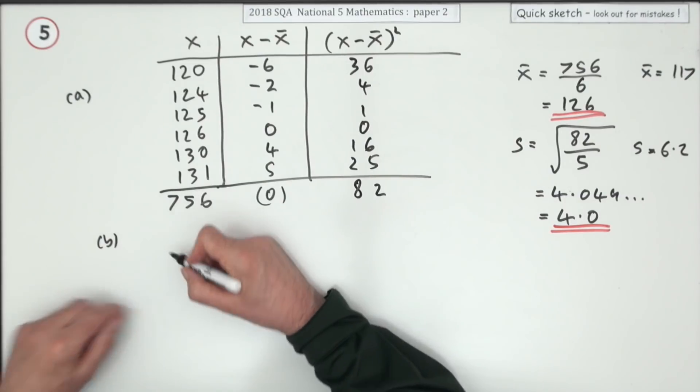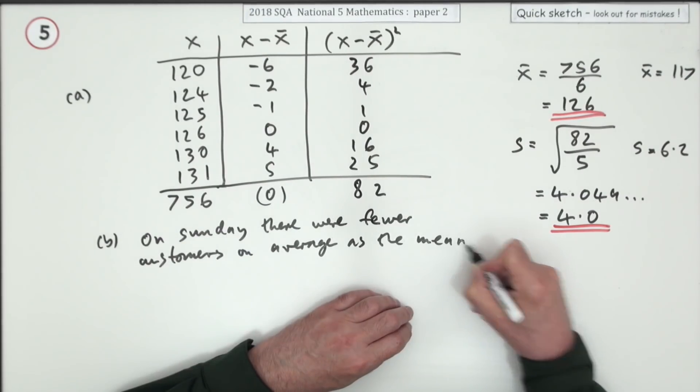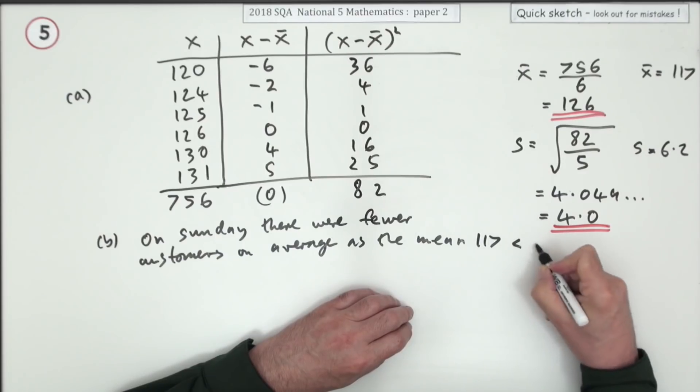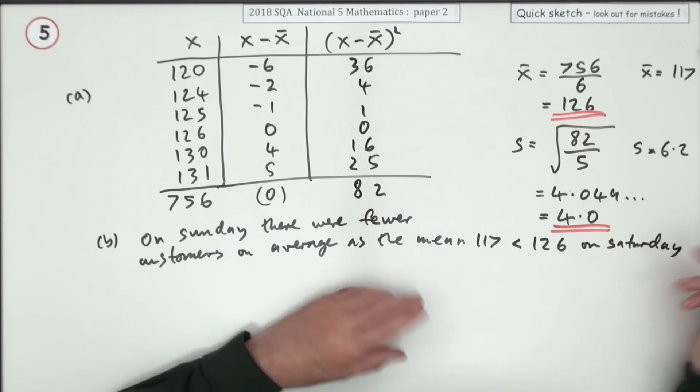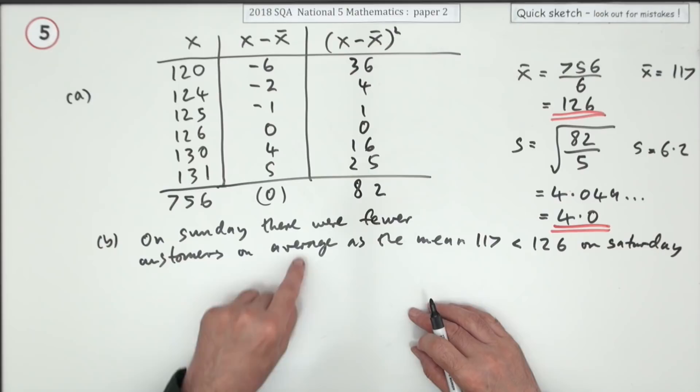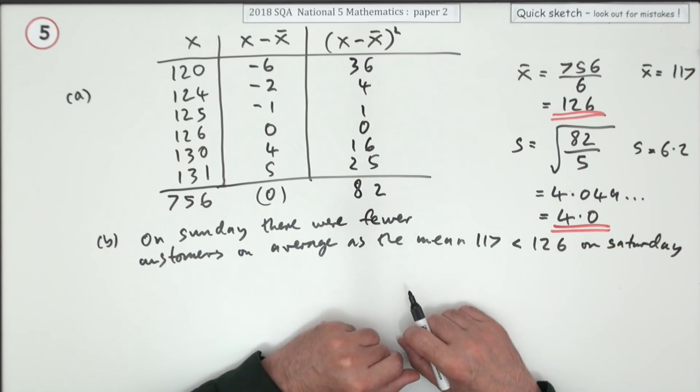Right, here we go. On Sunday there were fewer customers on average, as the mean 117 is less than the 126. That's it for mentioning the things - average is measured by the mean, and that justifies your statement about the mean.